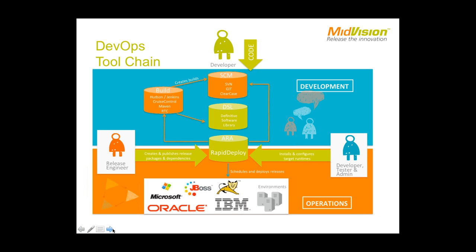We have different roles and types of users allowed to perform different functions within Rapid Deploy. If you're a release engineer, there are different types: a development release engineer, a test release engineer, and a production release engineer, depending on which systems they're allowed to deploy to.